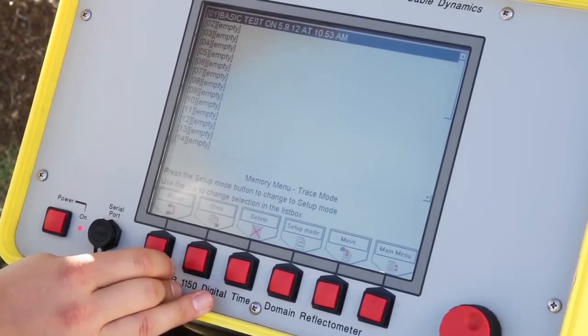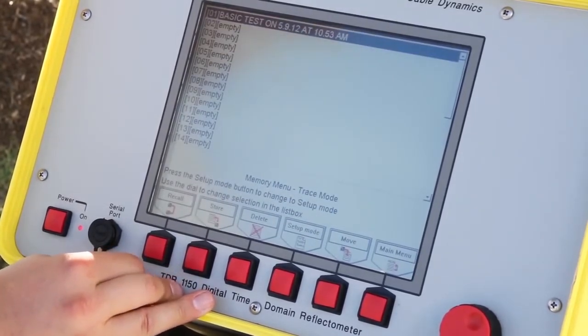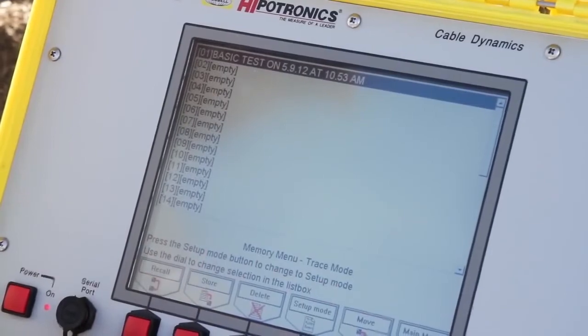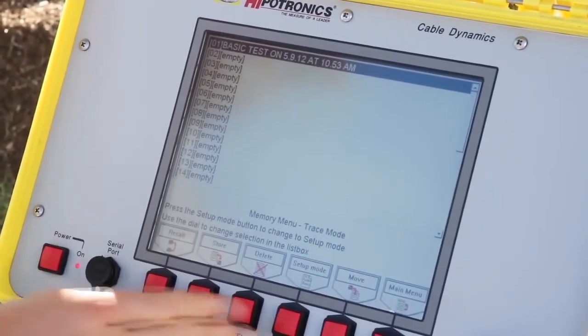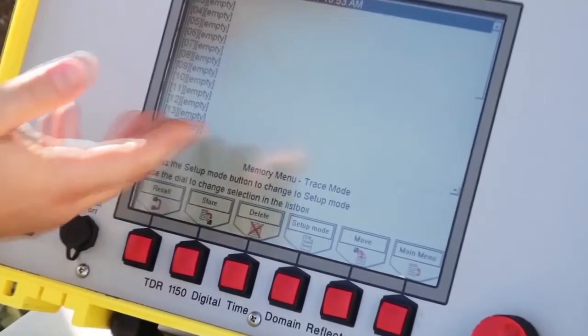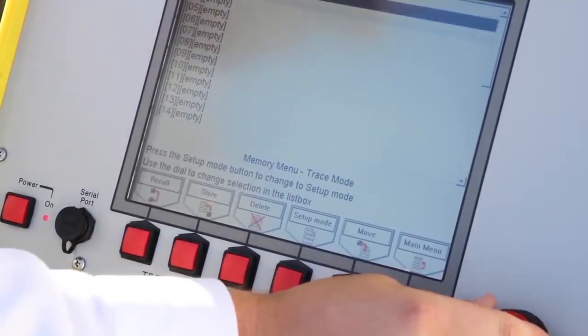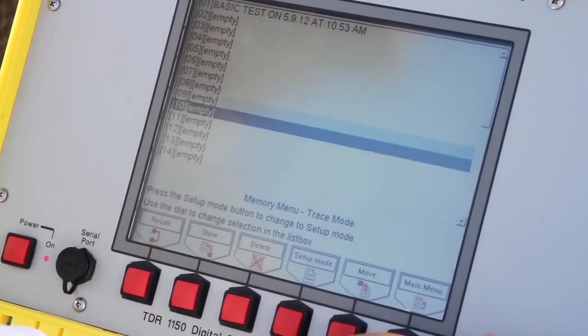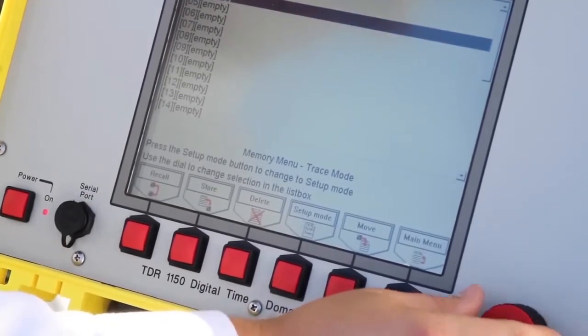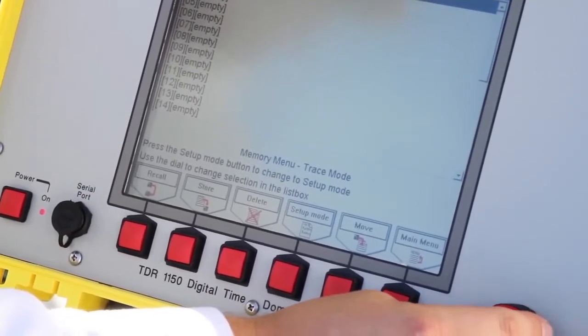And then next we can go to memory where we can store the traces that we did using the TDR. We can also delete them, move them around, recall them to pull them up and display them on the screen and scroll through each particular trace that has been stored on the TDR.